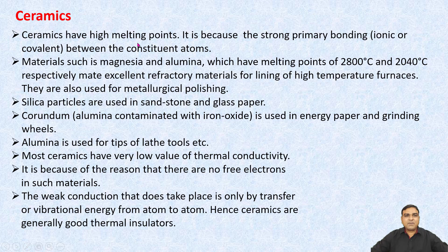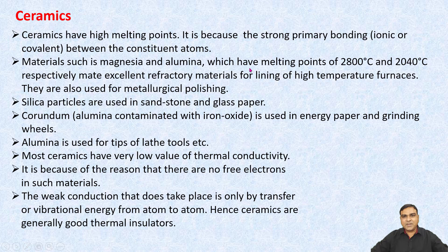Ceramics have high melting points because of the strong primary bonding, like ionic or covalent bonding, between the constituent atoms. Materials such as Magnesia and Alumina, which are most commonly used in ceramics, have melting points of 2800 degrees centigrade and 2040 degrees centigrade respectively.